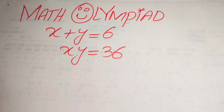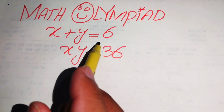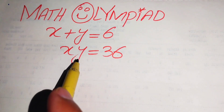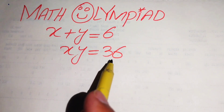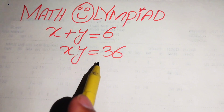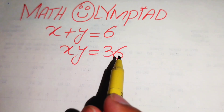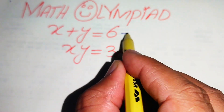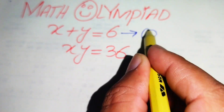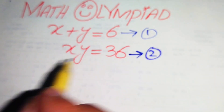Hello everyone, welcome to this algebra problem. Here we have x plus y equals 6, which we call equation number 1, and x multiplied by y equals 36, which we call equation number 2. We will solve this problem for the values of x and y.